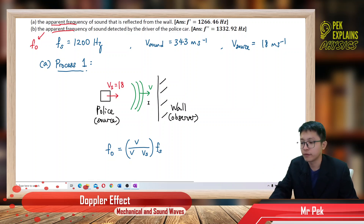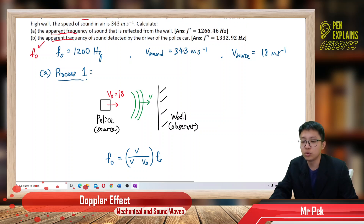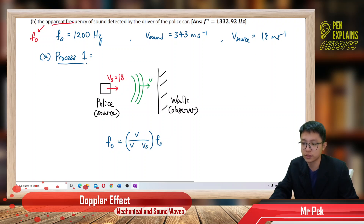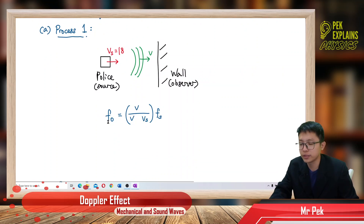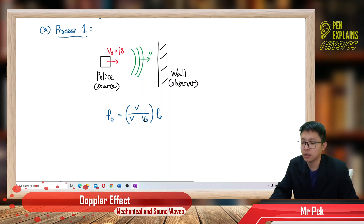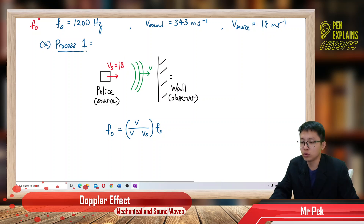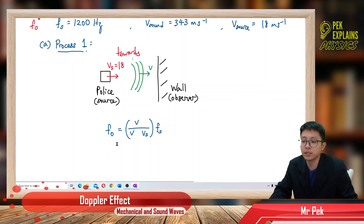The source is moving towards the observer at 18 meters per second. We want to find the frequency observed by the wall, which equals v over (v minus vs) times fs. The observer is not moving — only the source is moving — so we have vs in the denominator.